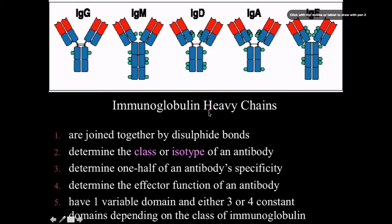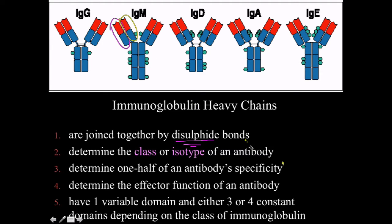Immunoglobulin heavy chains are the main structural component of the immunoglobulin — the light chain contributes only a small portion. The heavy chains are joined by disulfide bonds, making this a very stable protein. The constant parts of the heavy regions determine the class or isotype of an antibody, and also determine the effector function, including interactions in the Fc region with cells and proteins of the immune system.